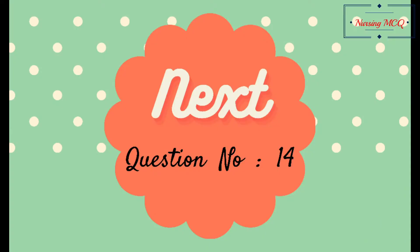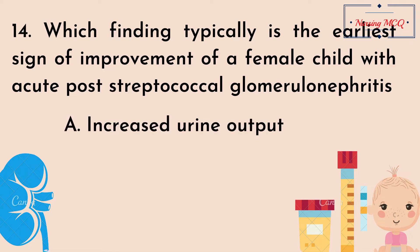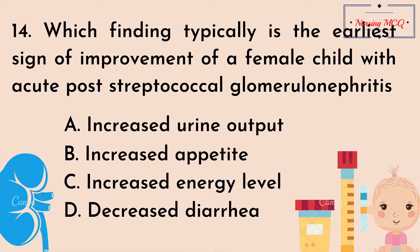Question number 14. Which finding typically is the earliest sign of improvement in a child with acute post-streptococcal glomerulonephritis? Option A, increased urine output; Option B, increased appetite; Option C, increased energy level; Option D, decreased diarrhea. The right answer is Option A: increased urine output.